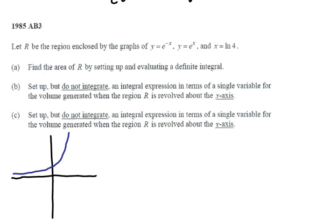So if e to the x looks something like that, if e to the negative x looks something like that, and x equals ln of 4, let's say there's that vertical line there, then we have that kind of triangular area there that I've highlighted in yellow.